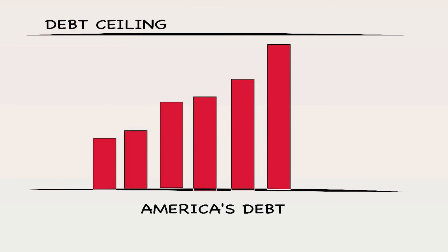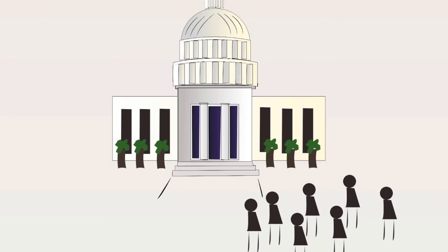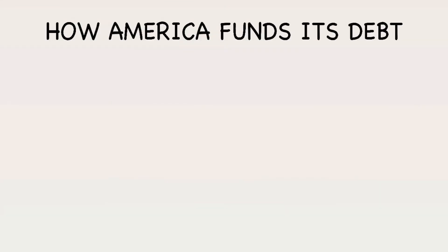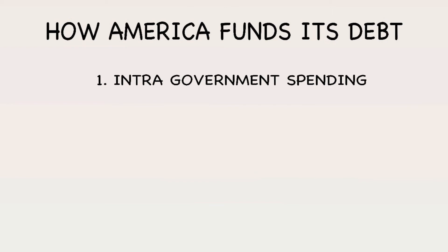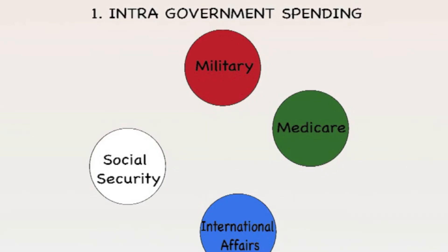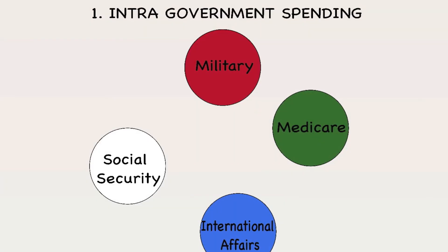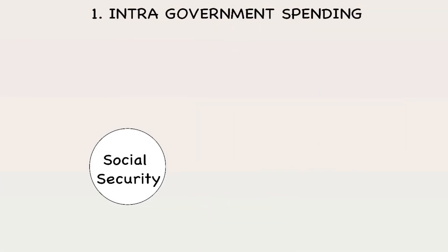We cannot keep increasing this debt ceiling forever, because eventually the people we're in debt to are going to come knocking, and that will not be a good day for America. By the way, who does America owe all of this money to? America funds its debt in two ways. The lesser of the two is intra-government spending, in which the government borrows money from other departments within its own government — a notable one being the Social Security Fund.